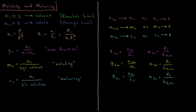The mole fraction of the solute, χ₂, is equal to the number of moles of the solute divided by the number of moles of solvent plus the number of moles of solute. That's called the mole fraction, χ₂ — the Greek letter chi.